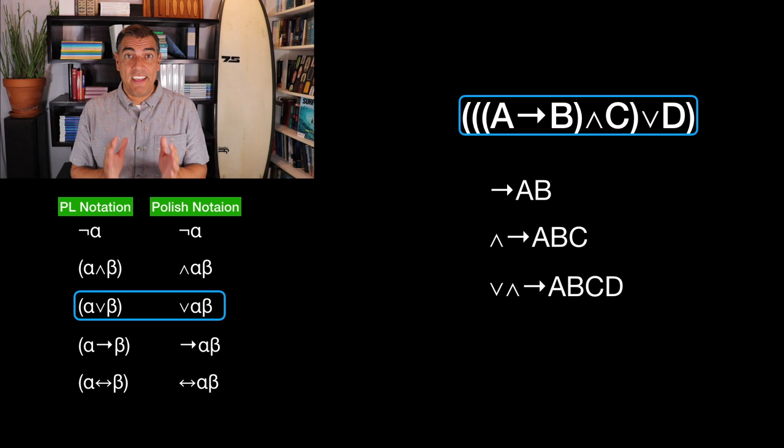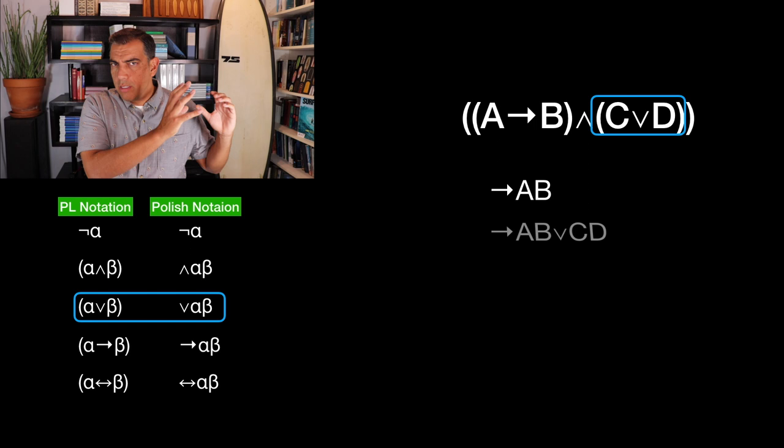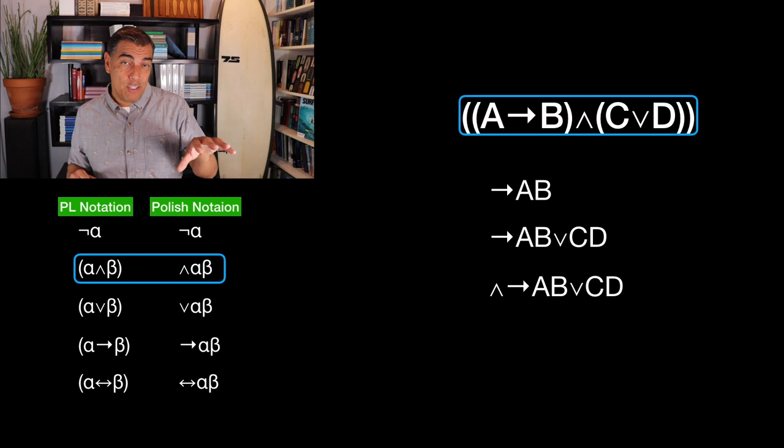If instead we wanted to say 'if A then B, and C or D,' first we write arrow A B, because that's our first inner one. We'd also write an or symbol C D, because that's a different inner parentheses. Those are going to be the two conjuncts. So we write our conjunction sign, then the first conjunct arrow A B, and the second conjunct or C D.